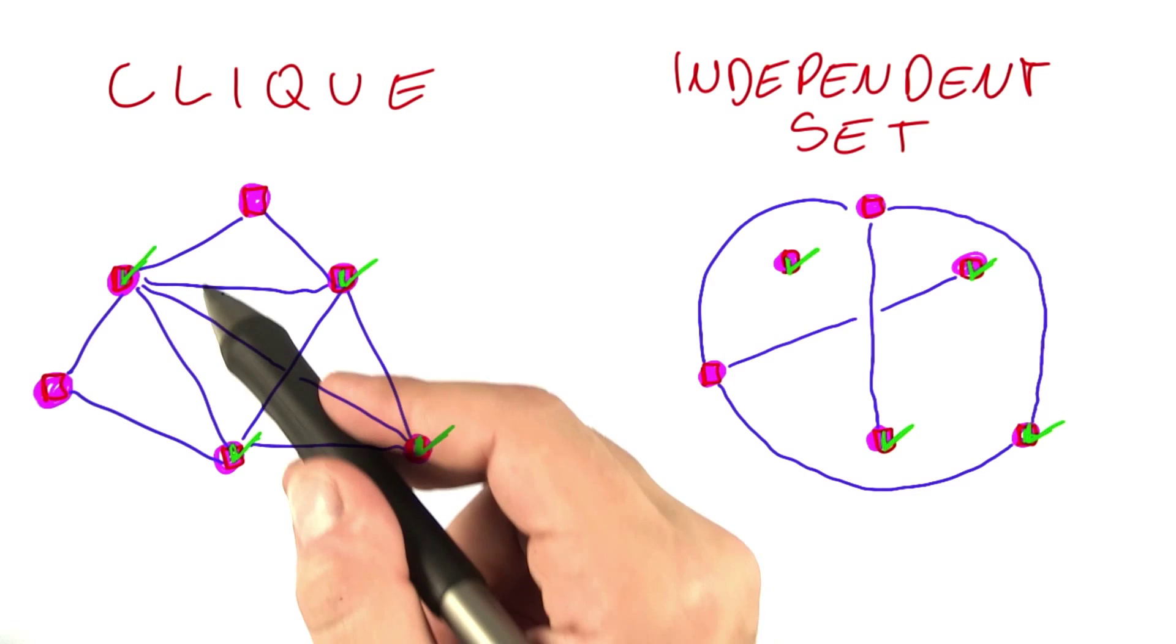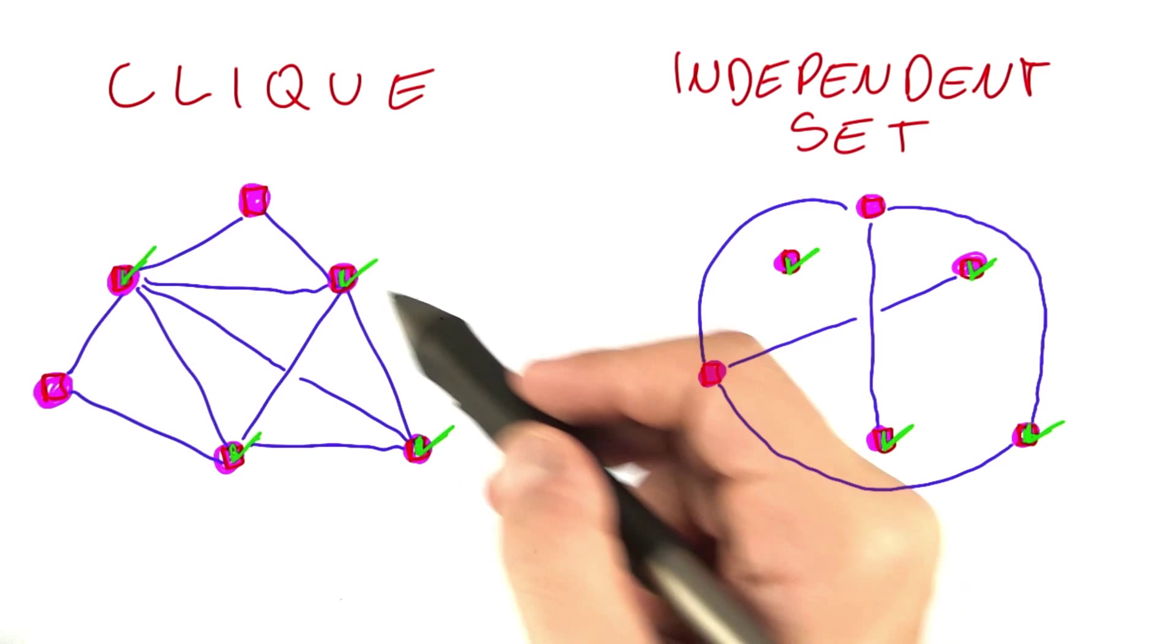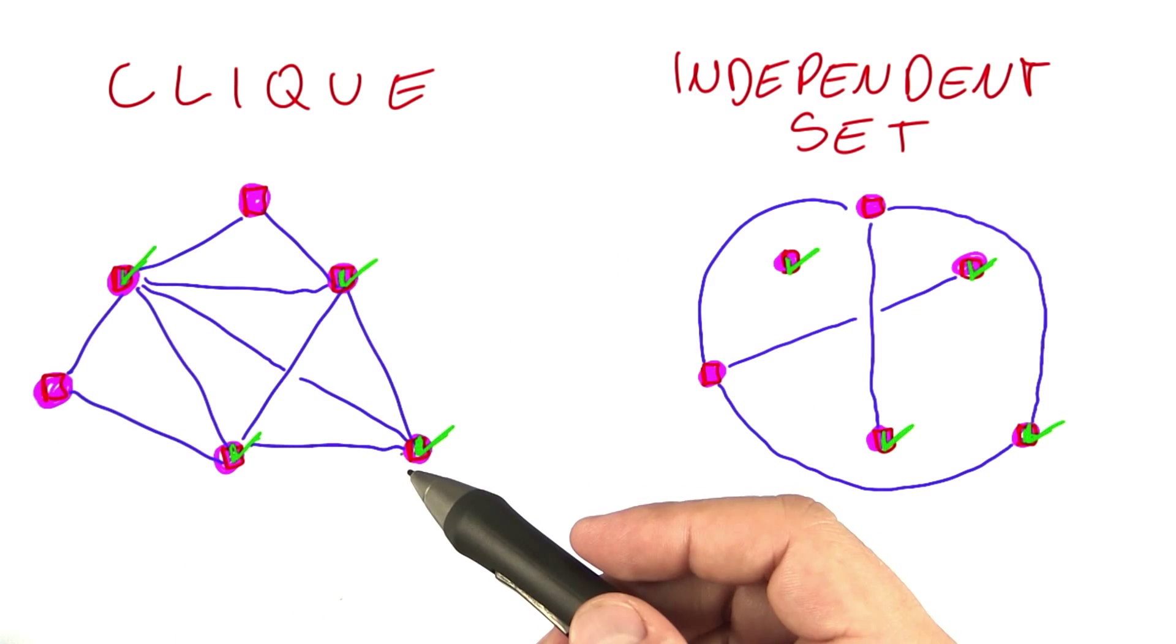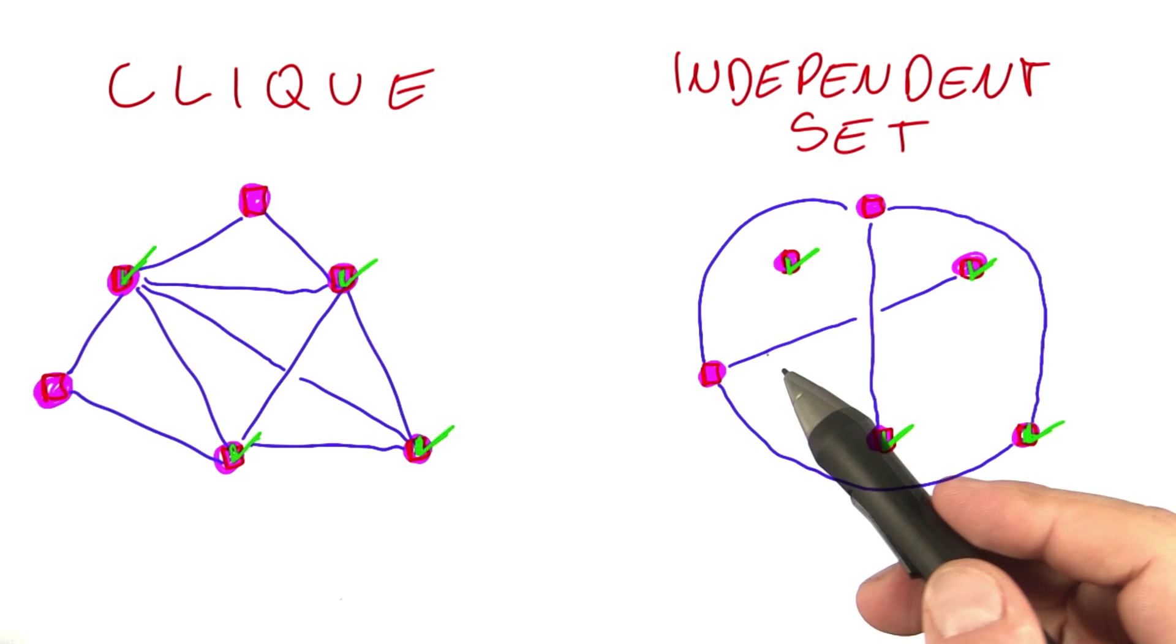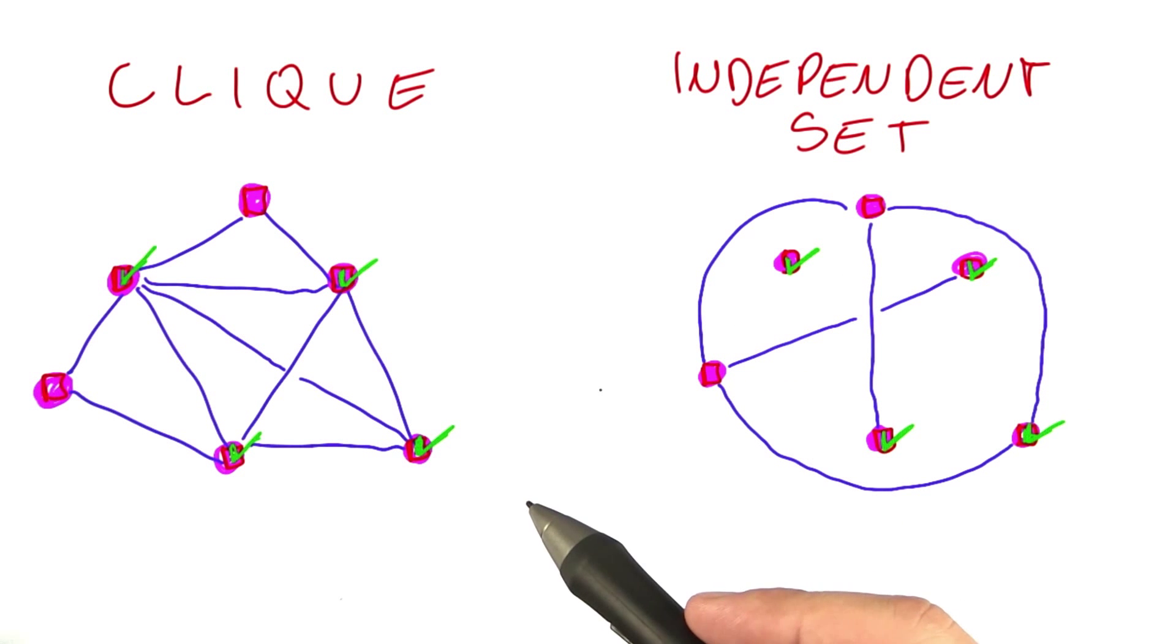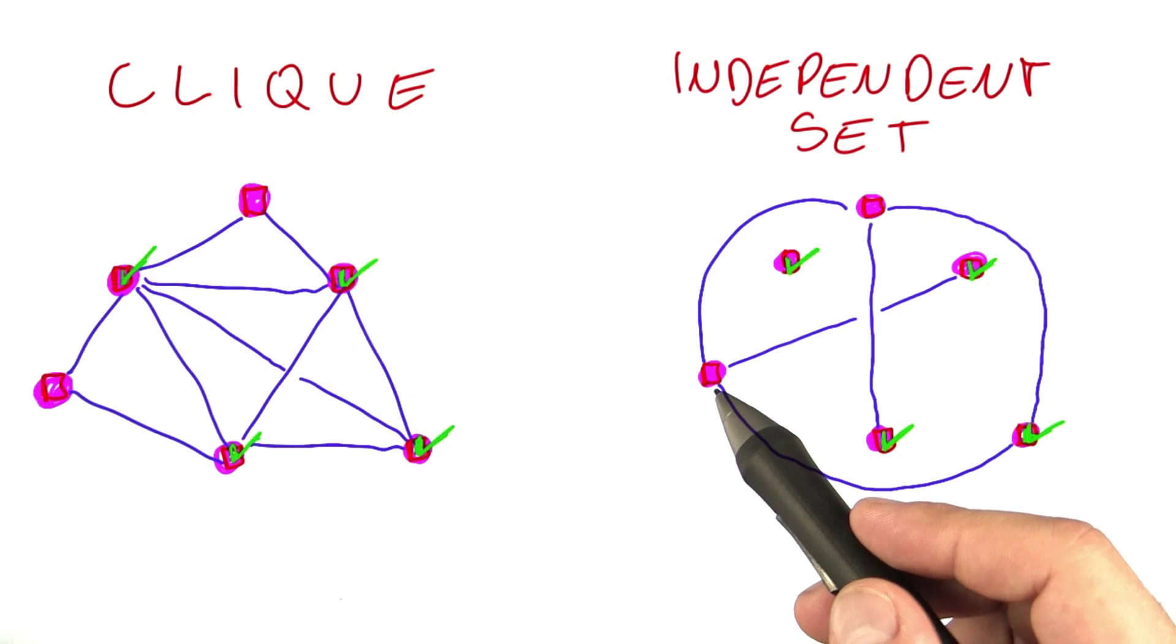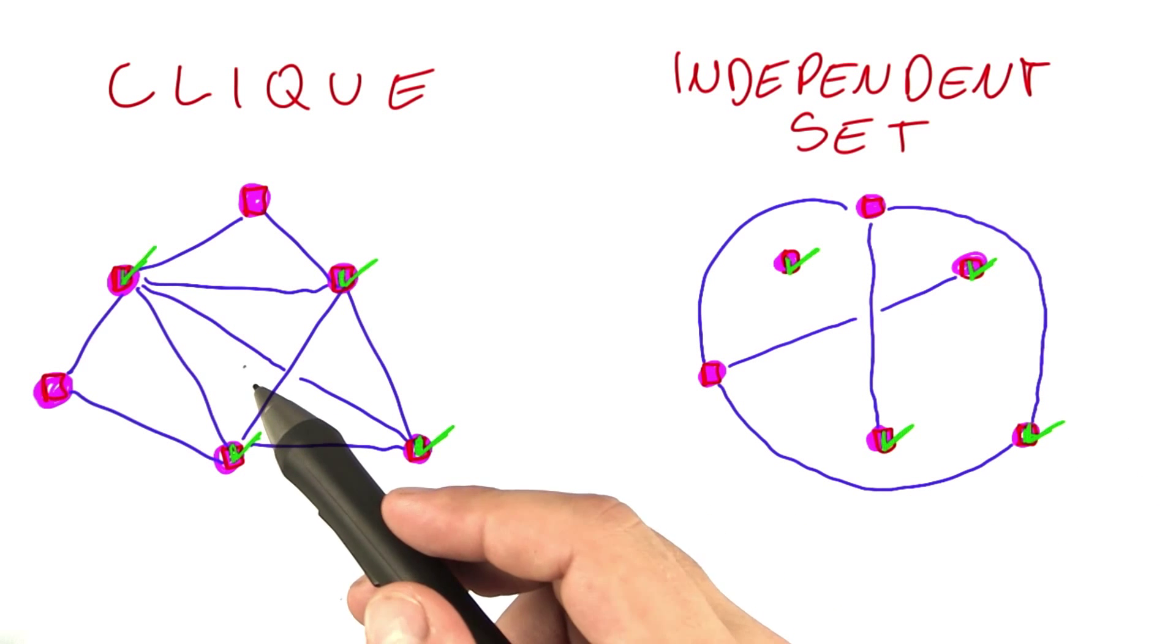But this means that finding the largest possible clique in one graph is basically the same as finding the largest possible independent set in the, well, you can call it an inverse graph, where you've connected exactly those vertices that were not connected over here.